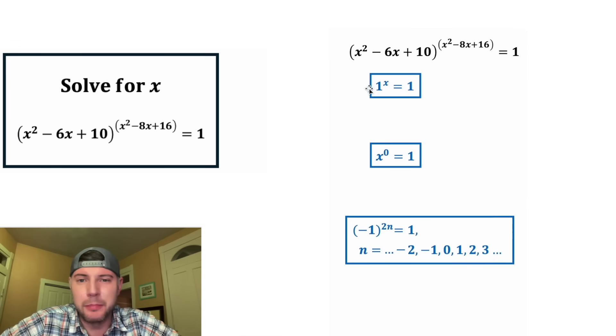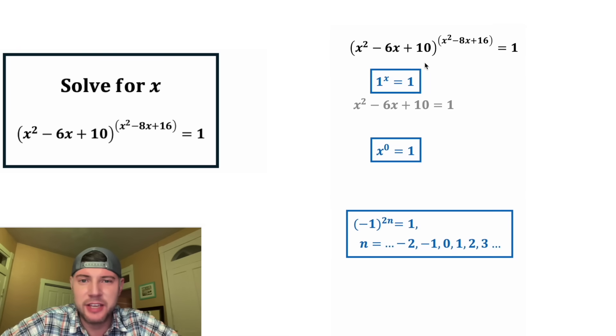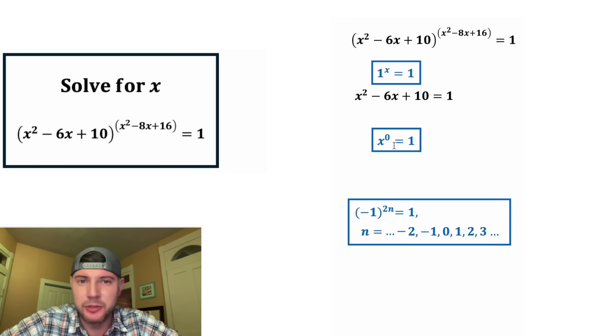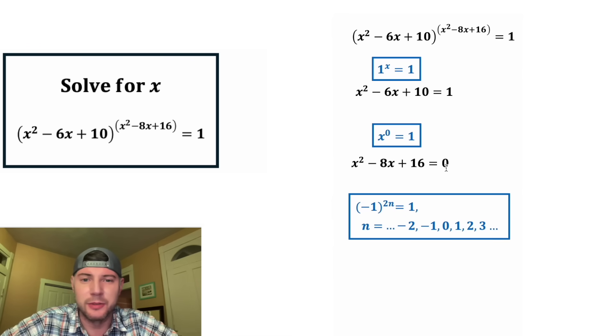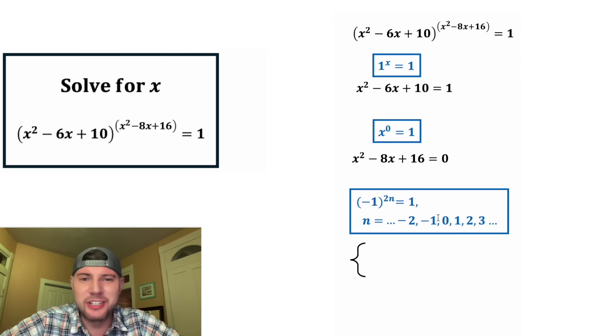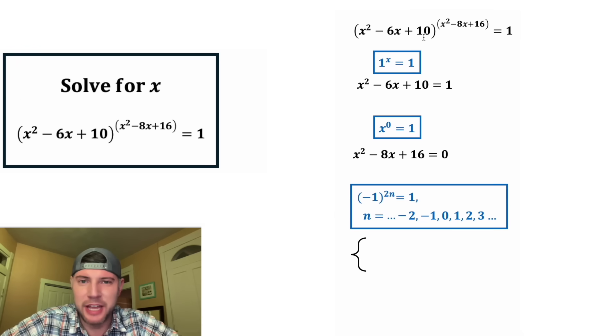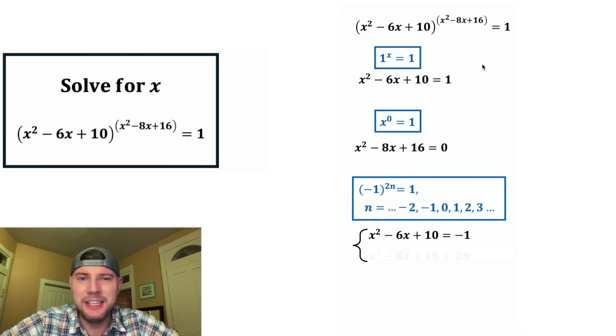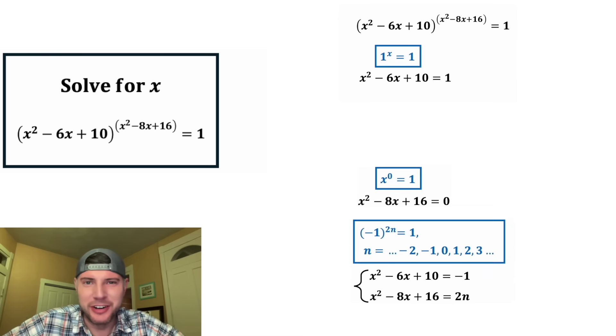In the first scenario, we need our base to equal 1. So this has to equal 1. In our second scenario, we need the exponent to equal 0, or this is equal to 0. And for the third scenario, we need the base to equal negative 1. That's this right here. And we need this exponent to be even.